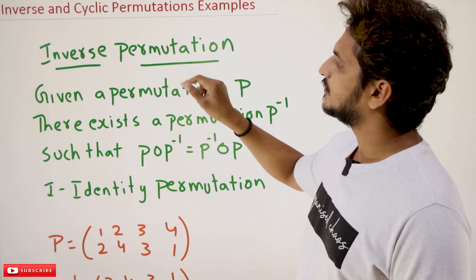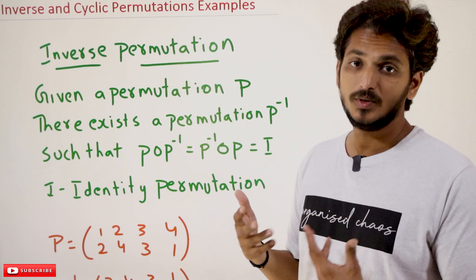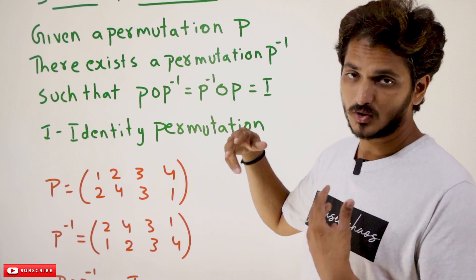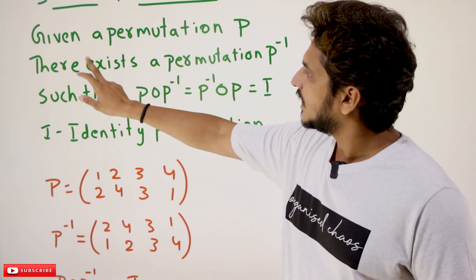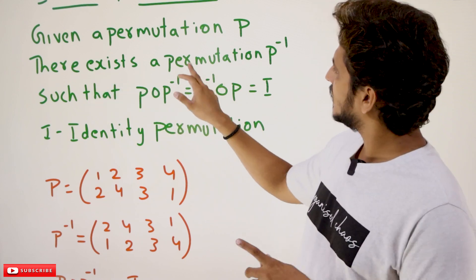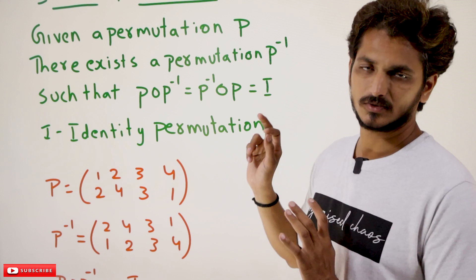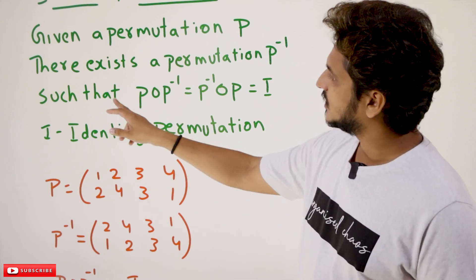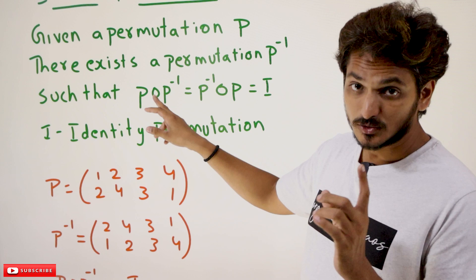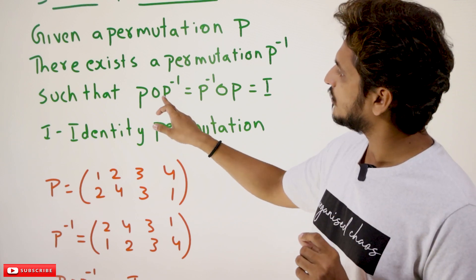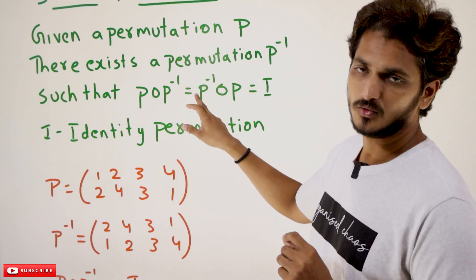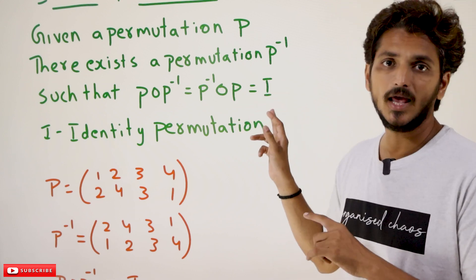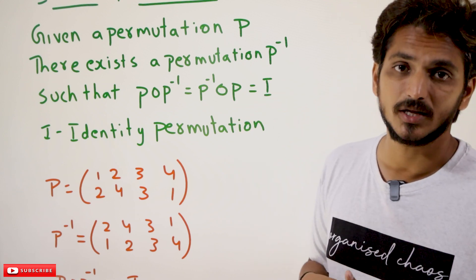Now, what do you mean by inverse permutation? Given a permutation P, there exists a permutation P-inverse such that it satisfies the condition: P composition P-inverse equal to P-inverse composition P equal to I, where I means the identity permutation.